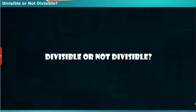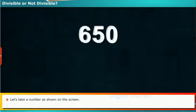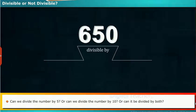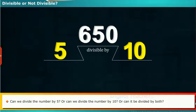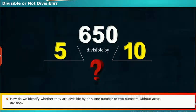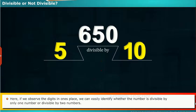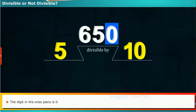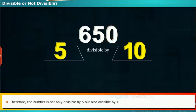Here we are going to learn whether a number is divisible or not divisible. Let us take a number as shown on the screen. Can we divide the number by 5? Or can we divide it by 10? Or can it be divided by both? How do we identify whether they are divisible by only one number or two numbers without actual division? If we observe the digits in the ones place, we can easily identify this. The digit in the ones place is 0.